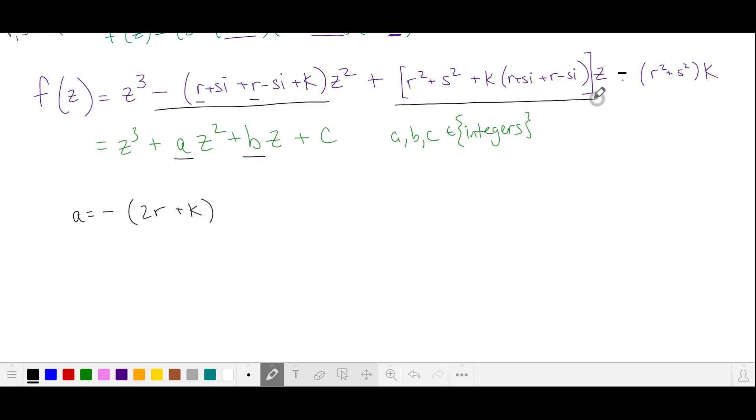b is the coefficient of z. And combining like terms, this is 2 times r times k. And our constant term c is this last one.